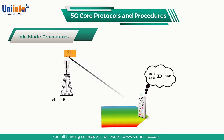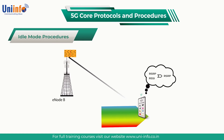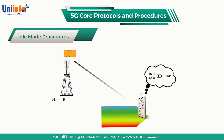It is possible that the UE discovers a set of SS or PBCH blocks which do not have any associated system information. In that case, the PBCH can provide information which directs the UE towards another set of SS or PBCH blocks.